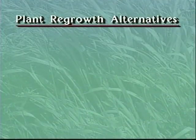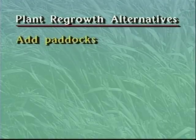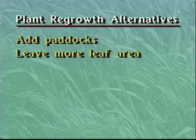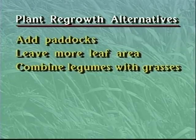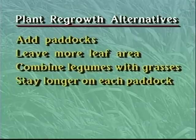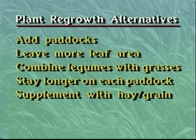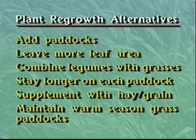A number of alternatives exist to provide for longer rest periods and slower regrowth rates. These alternatives include adding additional paddocks, leaving more leaf area following grazing to provide more rapid regrowth, maintaining some legumes with the cool season grasses, staying longer on each paddock, supplementing livestock diets with hay or grain, and maintaining some warm season grass paddocks strictly for summer grazing.